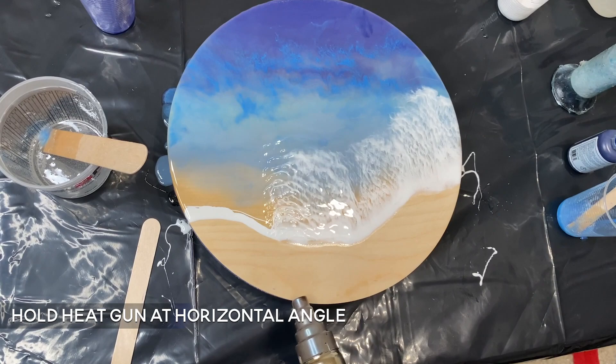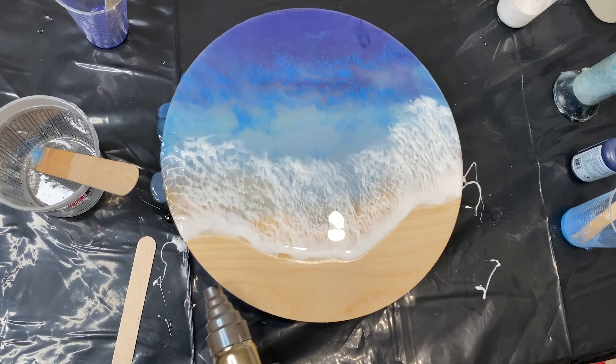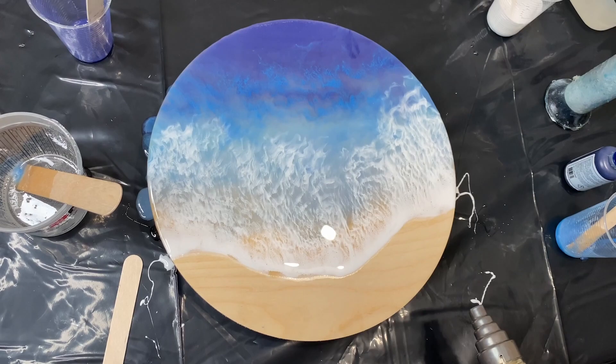If you watched my first video on lacing, you'll notice that I always hold my heat gun at a horizontal angle. This ensures that the pigment skims the surface instead of sinking. If you would like more information on lacing, I do have a video uploaded that gives all sorts of tips and tricks on getting different kinds of lacing effects.